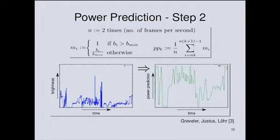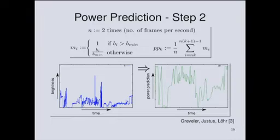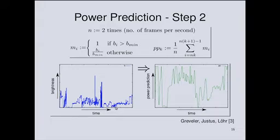For the power prediction, we analyze film chunks — maybe five minutes as used in this context. On the left side, the blue graph shows the brightness of the frames.